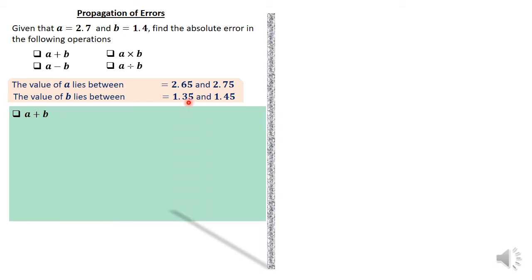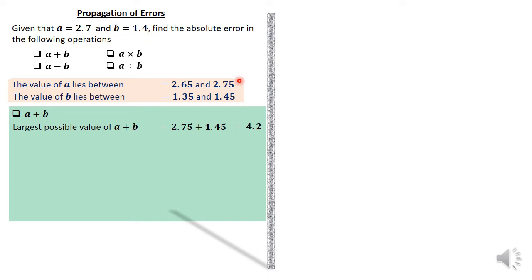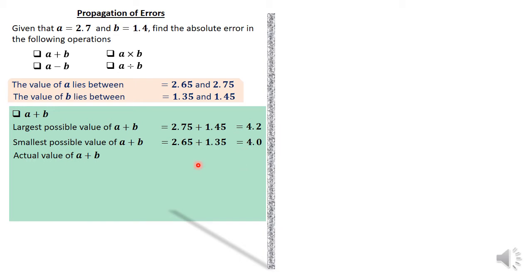Now, beginning with Part 1, A plus B. The largest possible value of the addition is 2.75 plus 1.45, which gives 4.2. If we want the largest possible value of 2.7 plus 1.4, the only combination is the highest values of both A and B. Similarly, the smallest possible value is 2.65 plus 1.35, which is 4.0. The actual value is 2.7 plus 1.4, which gives 4.1.